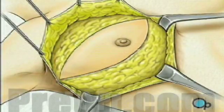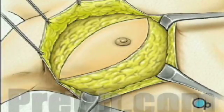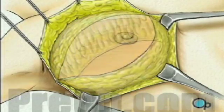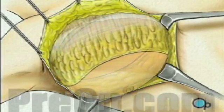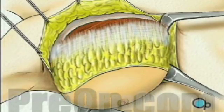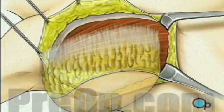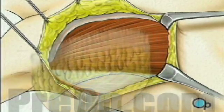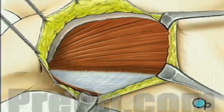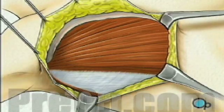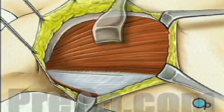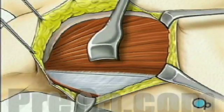Beginning at the clavicle or collarbone, the surgeon then begins to carefully cut the breast tissue away from the muscles that lie just beneath. When the breast has been completely freed, it is lifted away, exposing the top layer of muscle, called the pectoralis major. The surgeon will pull this muscle temporarily aside, exposing the next layer of muscle, the pectoralis minor.